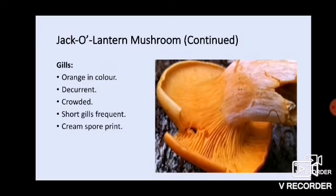The jack-o'-lantern mushroom does not have ridges like the chanterelle. What it has is gills, and those gills are orange in color. They are deeply decurrent, running a good ways down the stipe — that's one of the reasons people mistake one for the other, especially when they're new to the hobby. The gills are fairly crowded together with frequent short gills. This mushroom produces cream spores. So if you're going to pick chanterelles, make sure you're looking for those ridges and make sure they are deeply forked.